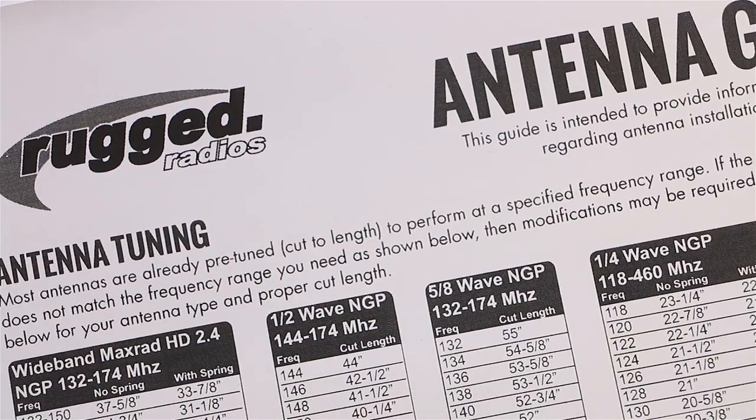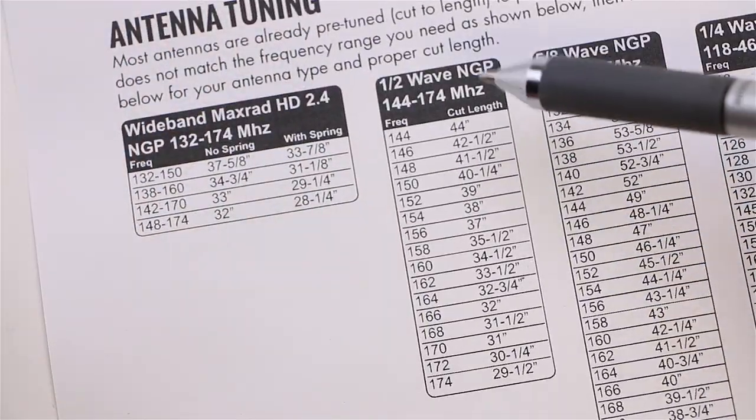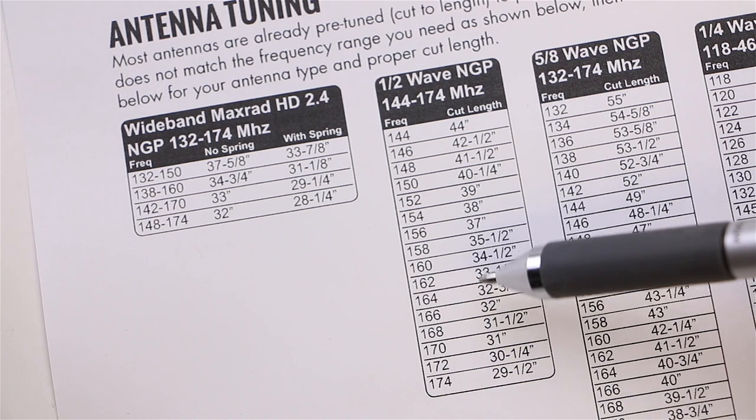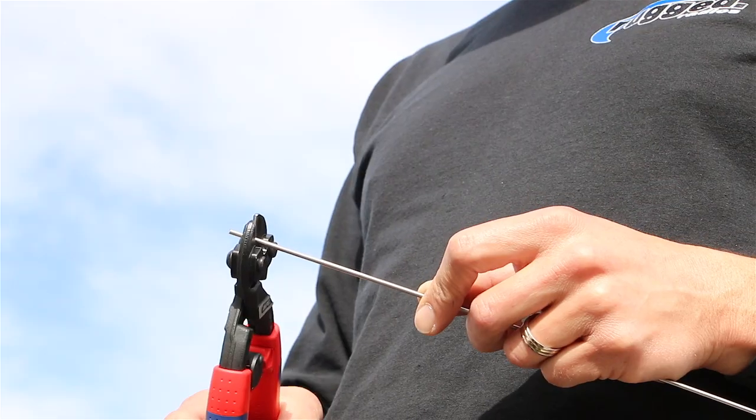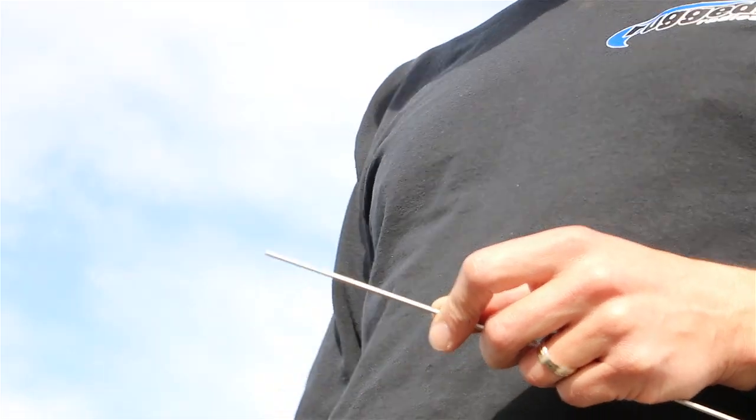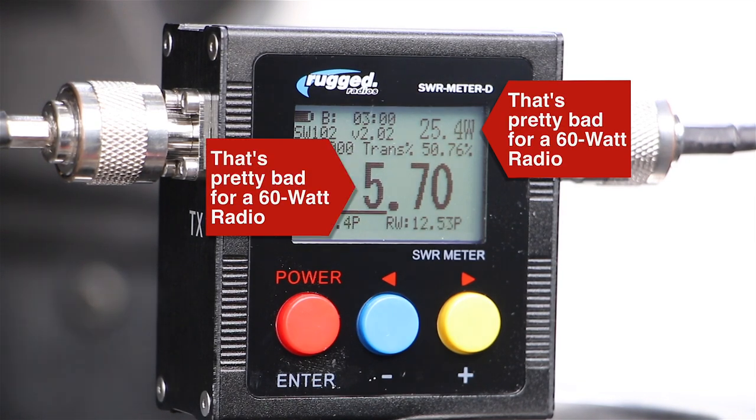Following the guide, we cut the antenna in small increments to the proper length and continue testing. It's important to cut and test in small increments because you can always cut shorter as you go, but you can never put back what you removed from your antenna.